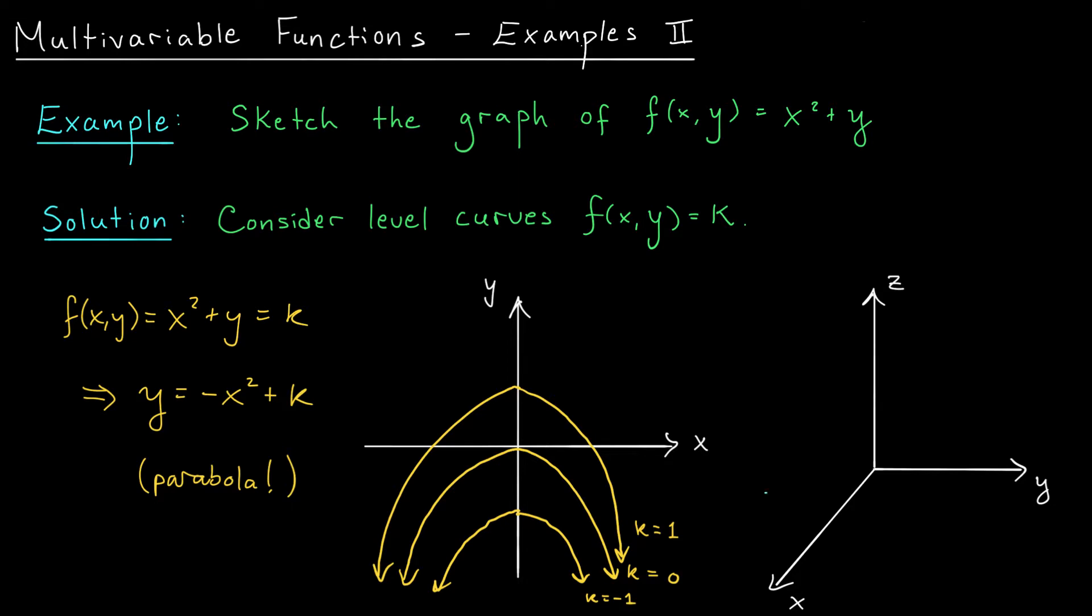When k is 0, I'm going to get a parabola pointing in the negative y direction, something like this. And when k is 1, I get a slightly higher parabola pointing in the same direction, something like this. When k is minus 1, it instead moves down. And I guess I could fill in a few more.